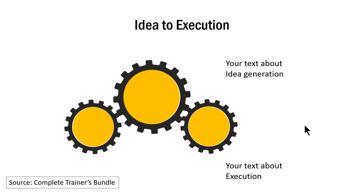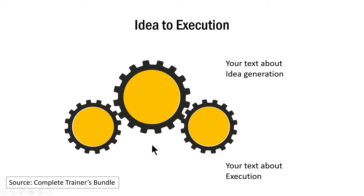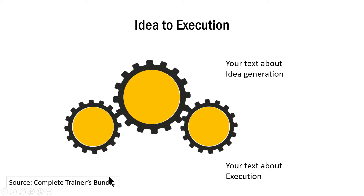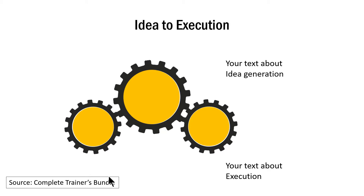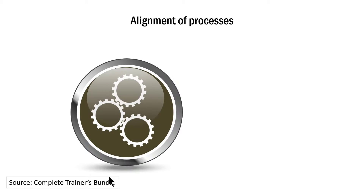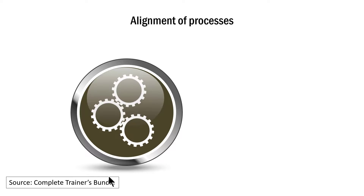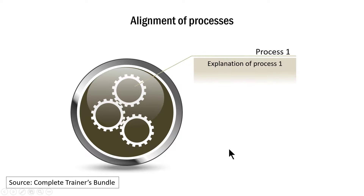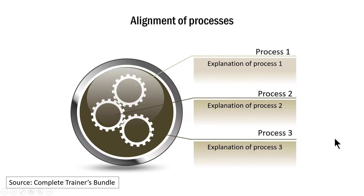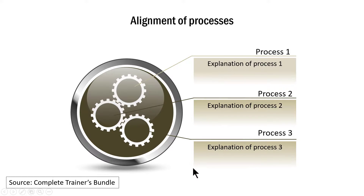All this is ready-made available in our Complete Trainers Bundle. Complete Trainers Bundle is a collection of 4,022 top quality templates created using the cutting-edge neuro slide design system. Let me show you one final example of spinning gears: the concept of alignment of processes. Each of these gears represents a process and we show how the various processes can work together.